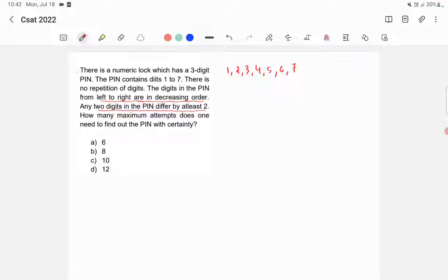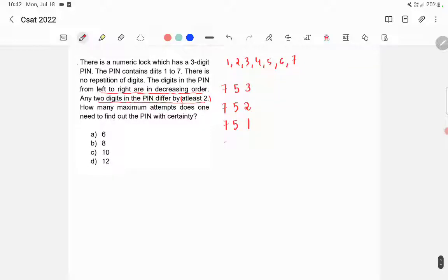Let's find out the possibilities starting with 7. We can have 7, 5, 3 because 2 digits should differ by at least 2. So 7 and 5 is differing by 2, 5 and 3 is differing by 2, and it is at least 2, so 2 or 3 or 4 like that is okay. So 7, 5, 3 is one possibility. 7, 5, 2 is another possibility. 7, 5, 1 is another possibility. Then 7, 4, 2 is a possibility. 7, 4, 1 is a possibility. 7, 3, 1 is a possibility.